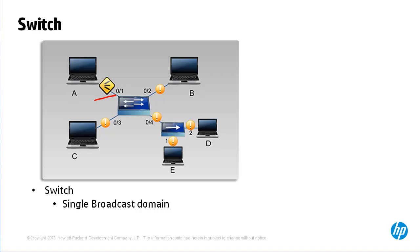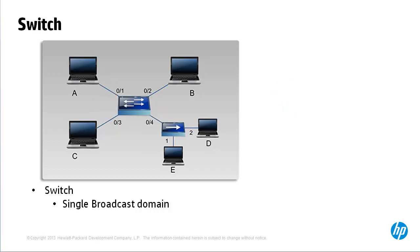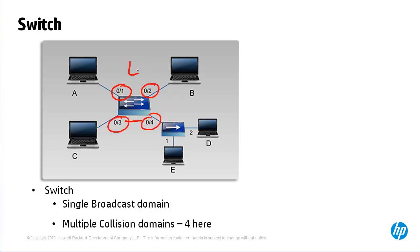It is good practice to limit or contain broadcasts within a network. In IPv6, for example, no broadcasts are supported — only unicasts, multicasts, and something called anycasts. Broadcasts have been removed from IPv6. Each port on a switch is a separate collision domain, while a hub acts as a single collision domain. A collision on any switch port is contained to that port. However, broadcasts are flooded out of every port on the switch, so with VLANs we can contain the broadcasts on layer 2 switches.